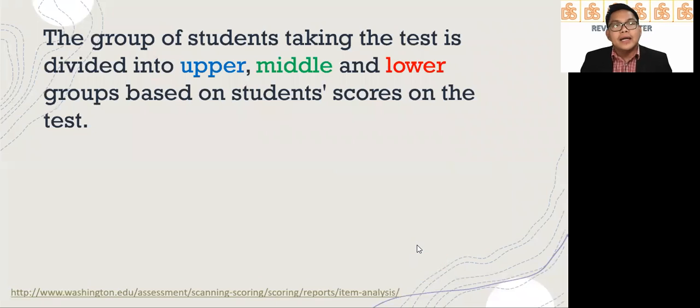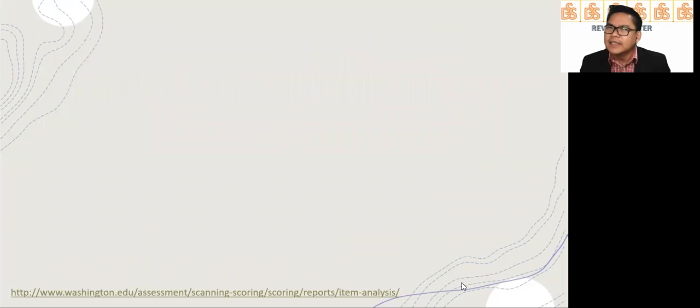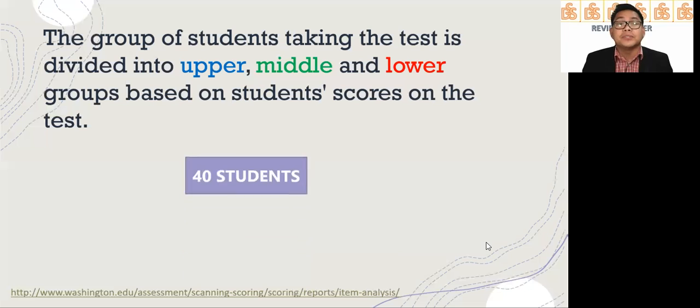The group of students taking the test is divided into three groups: upper, middle, and lower groups based on students' scores on the test. How are we going to divide? It has been long accepted that optimal item discrimination is obtained when the upper and lower groups each contain 27 percent of the total group.